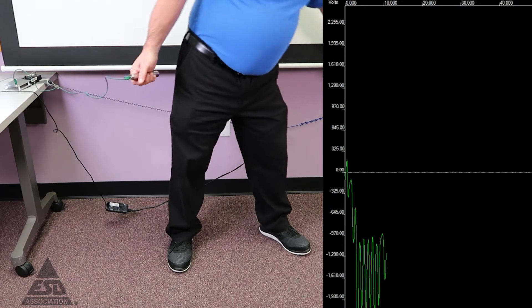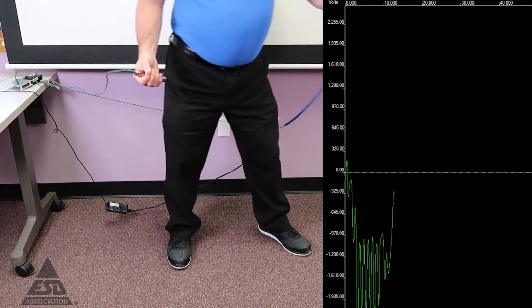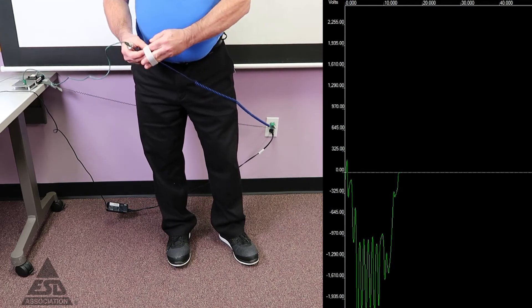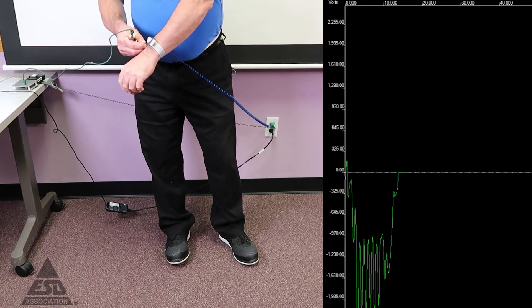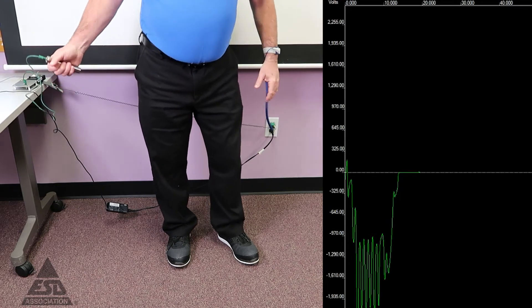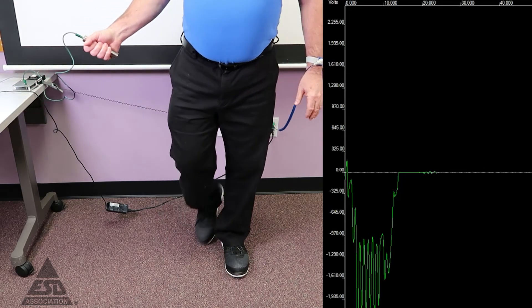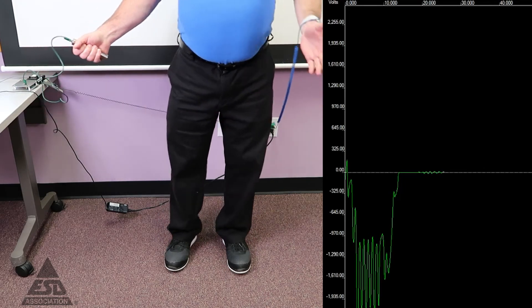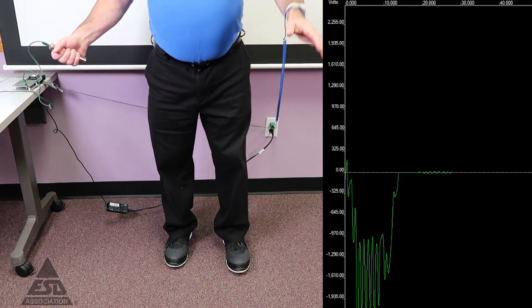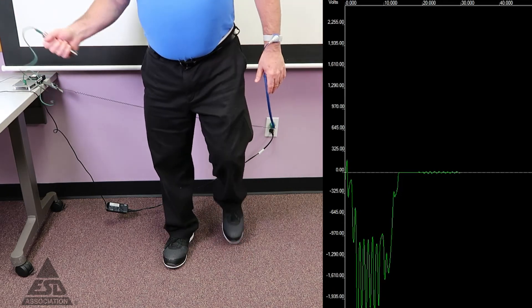Effectiveness of a wrist strap system: I have my wrist strap, put it on snug. I've already pre-tested this. It's connected to ground. And if you notice, no voltage generation. It's a wrist strap and it doesn't matter if it's a wrist strap that's a daily wear or continuous monitor, it will work like that.